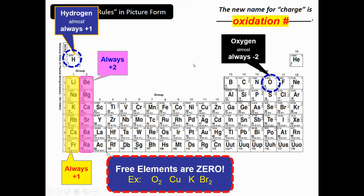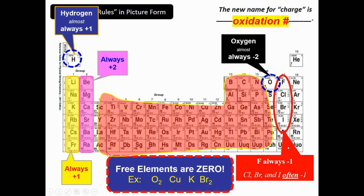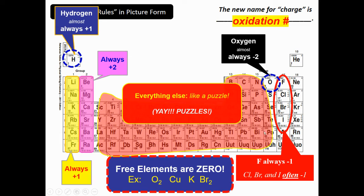Finally, the halogens — fluorine, chlorine, bromine, and iodine. Fluorine is always negative one. Chlorine, bromine, and iodine are often negative one, but occasionally you might have to puzzle out a different charge. That brings us to the rest of the periodic table — basically everything else in a compound requires a little math. It's like little puzzles, and everyone loves puzzles, trying to figure out the other oxidation numbers.